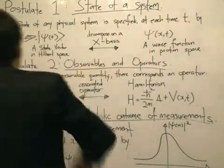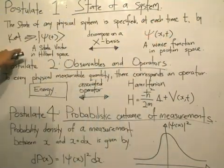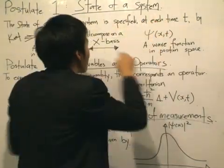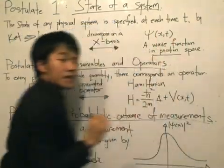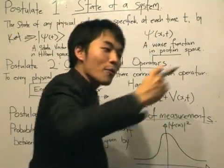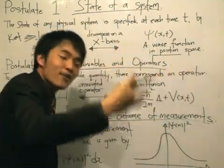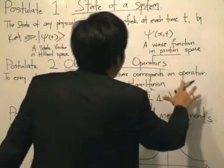Instead, the state vector can be decomposed onto an x basis. The x basis is the position basis, and what we will get is that we will get a wave function in the position space. The Hilbert space, we can decompose onto any other basis, but we're going to choose the x basis, which is the position basis for a reason. That reason is because we are dealing with physical problems that move, basically it's physical problems that the particle moves forward and backwards, the position space.